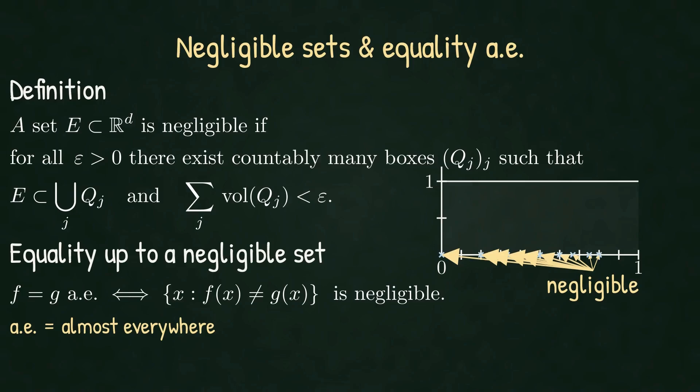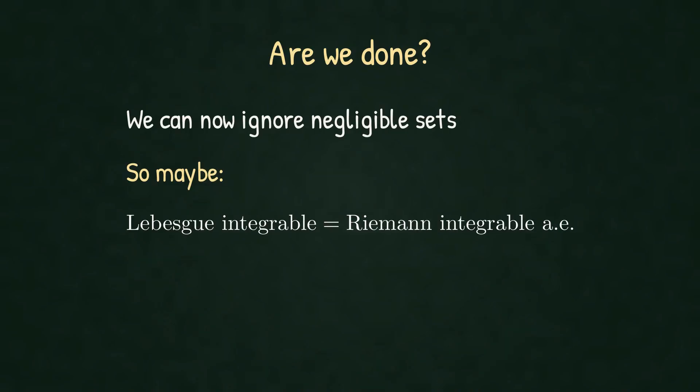Back to our Dirichlet function. It equals the constant 1 almost everywhere on the interval [0,1]. The rationals where they differ are negligible. So, are we done? We can now ignore negligible sets. Maybe that's all Lebesgue integration is: Riemann integration defined almost everywhere.